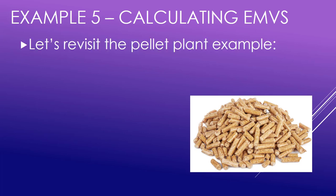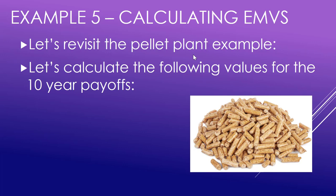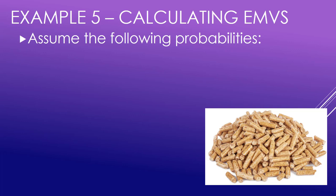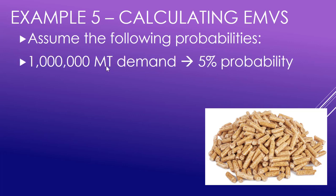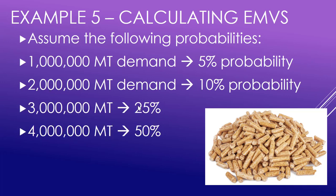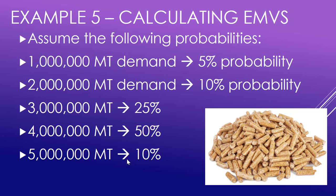Let's calculate those EMVs and the maxi max and maxi min with this pellet plant example. Looking at those 10-year payoffs, let the following probabilities be true: the odds of having 1 million metric tons demanded over the 10 years is 5%; 2 million is 10%; 3 million is 25%; 4 million is 50%; and 5 million is 10%. These numbers come from taking the original demands and multiplying them by 10.